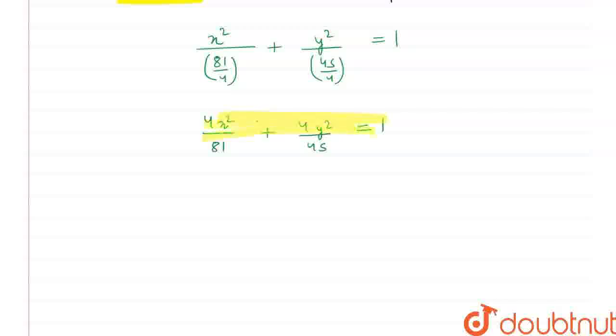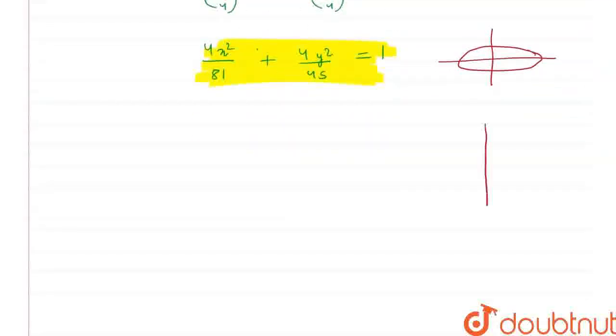So this equation of ellipse is for the horizontal ellipse which is like this. Let's suppose that if my ellipse is going to be vertical. Then nothing but just my b and a terms will get interchanged.